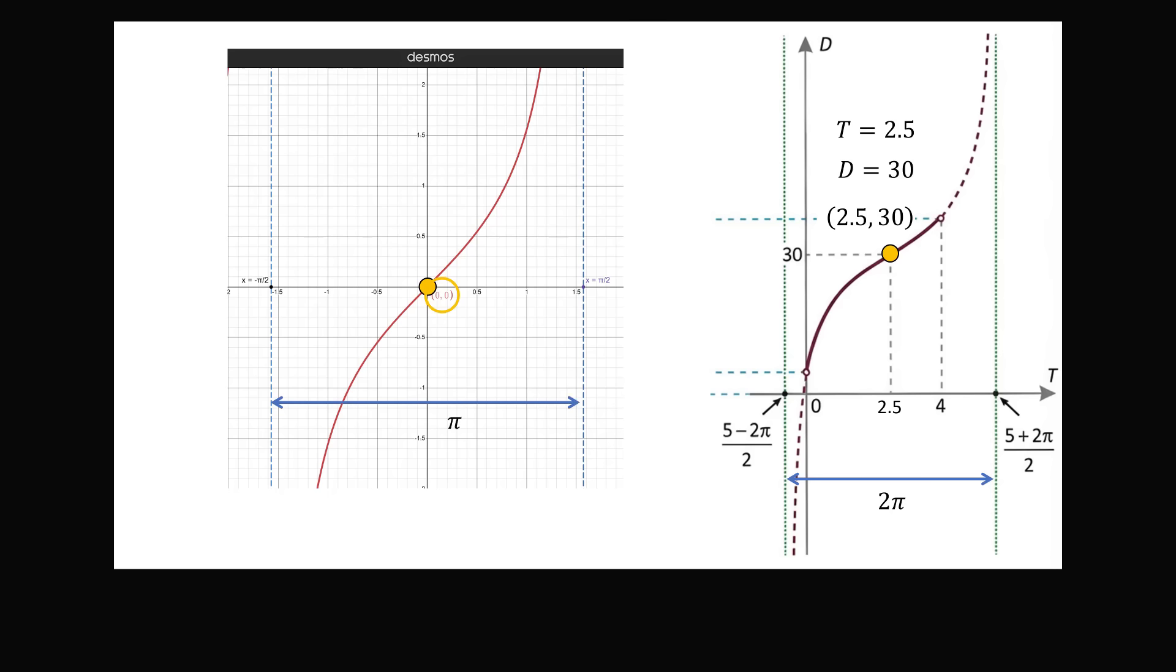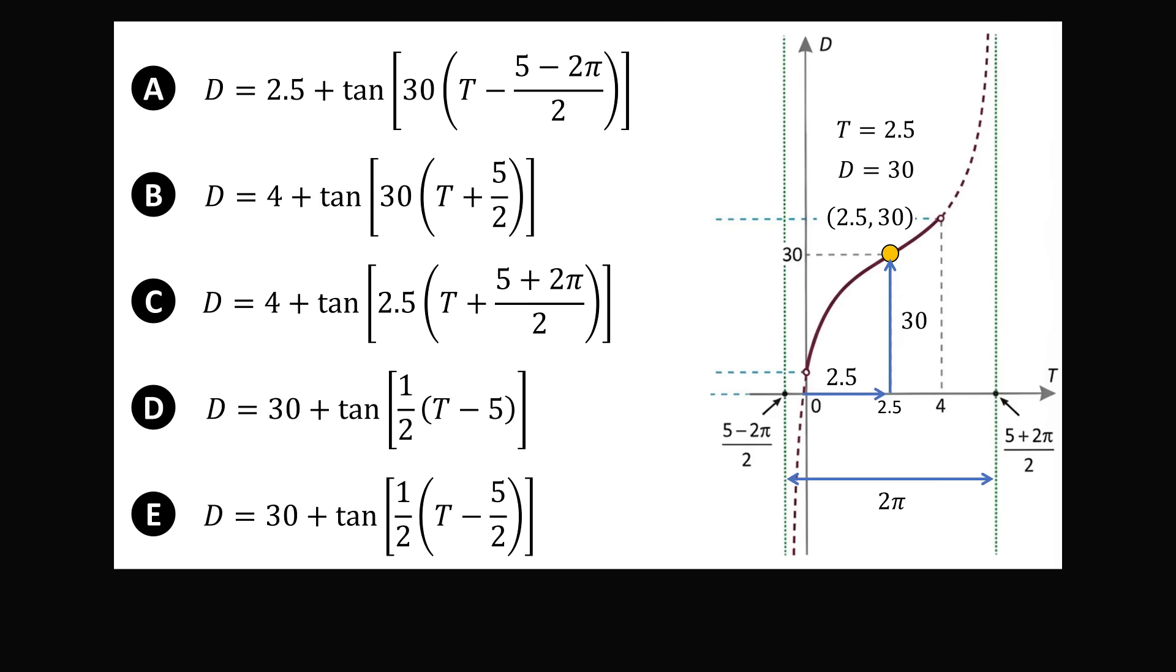So, compared to tangent of x, this graph is shifted vertically by 30 units and it is shifted to the right by 2.5 units. So, let's see which of the answer choices reflects these translations. Well, let's start out with a vertical shift of 30 units. This is only there in answer choices D and E. In answer choice A, it's 2.5 and in B and C, it's vertically shifted by 4 units. So, A, B, and C can immediately be eliminated.